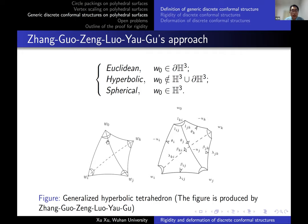By assigning appropriate weights on the edge lengths of the generalized hyperbolic tetrahedron, we recover the different types of discrete conformal structures on surfaces, including tangential circle packing, Thurston circle packing, inversive distance circle packing, and vertex scaling.